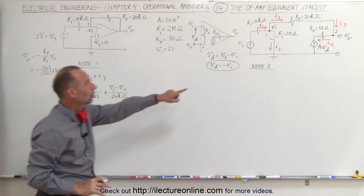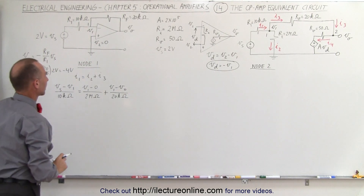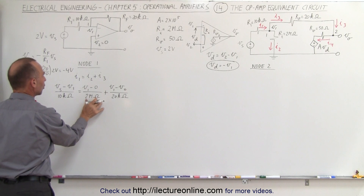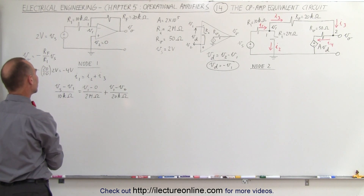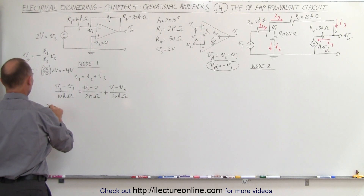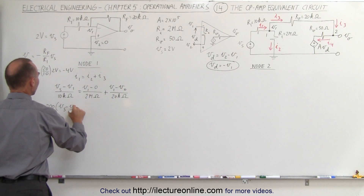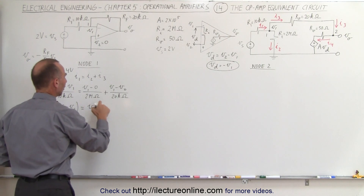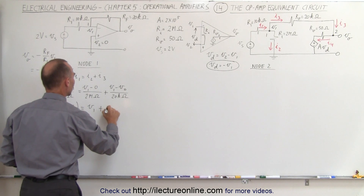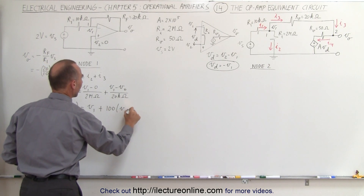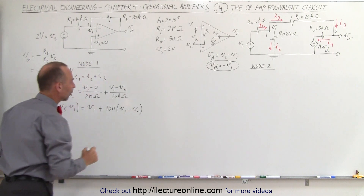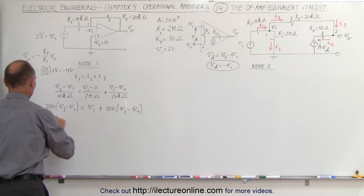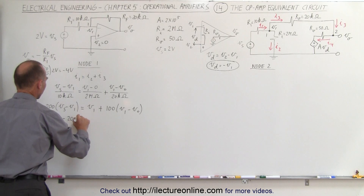We'll solve for V_1 by eliminating the denominators. Multiplying both sides by 2 megaohms: 2M/10k equals 200, so we get 200 times (V_S minus V_1) equals V_1 plus (2M/20k) times (V_1 minus V_O). That ratio 2M/20k is 100, giving 200(V_S - V_1) = V_1 + 100(V_1 - V_O).